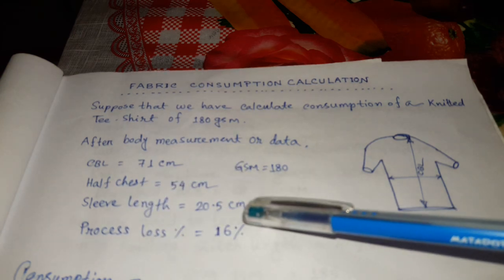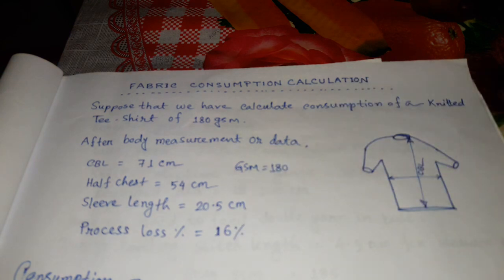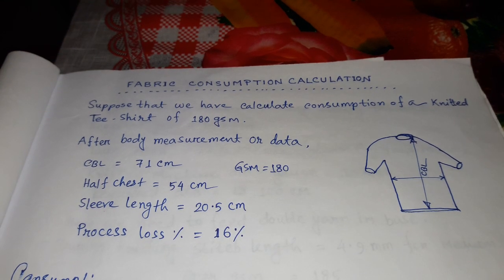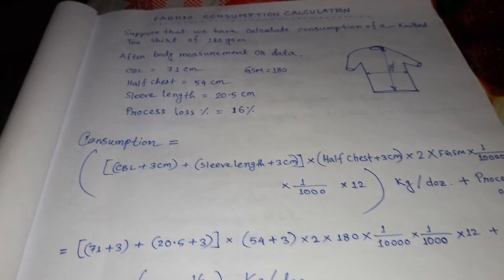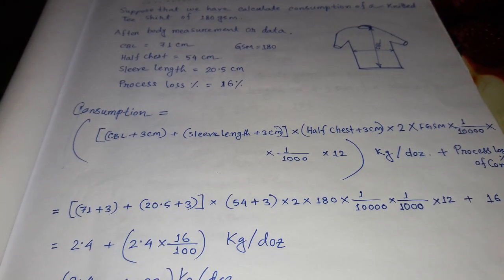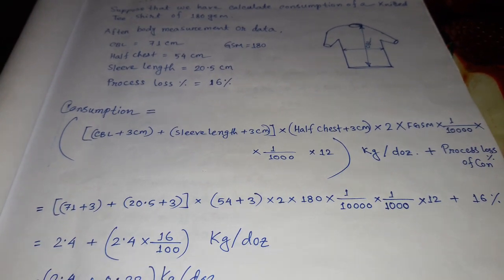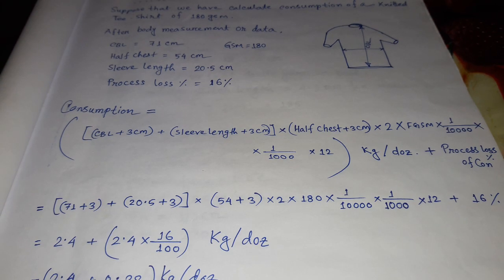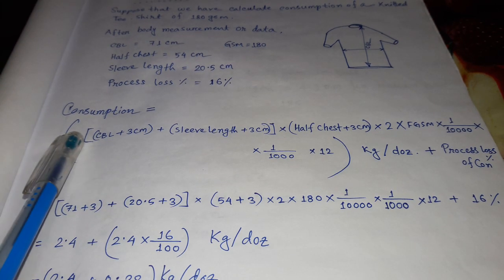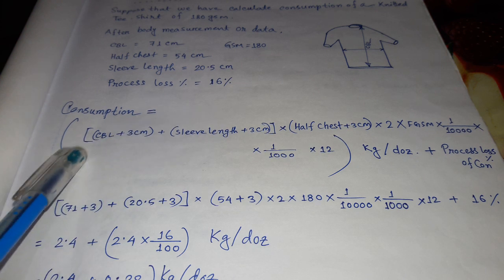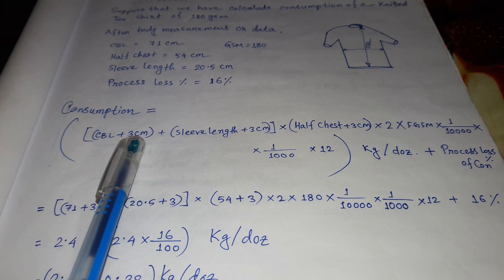So we come to calculate this. Consumption equals - we know the formula - center back length plus 3 cm allowance.